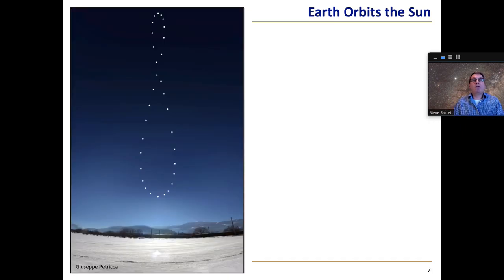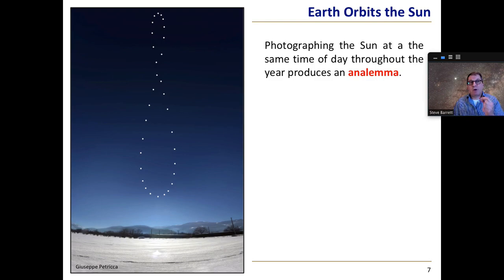If you photograph the Sun at the same time of day throughout the year, for instance at 12 o'clock according to your watch, you would produce an image like this. If you take an image every week or so throughout the year you get this classic analemma.